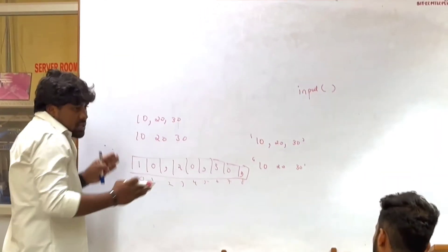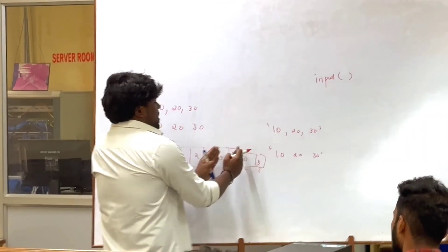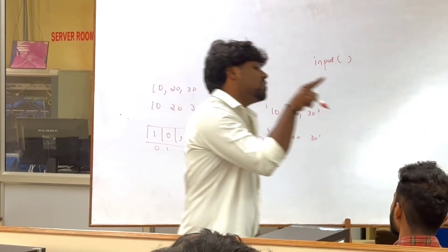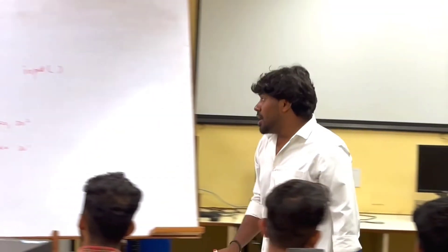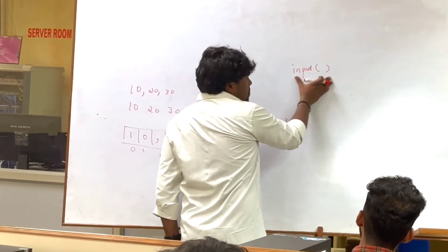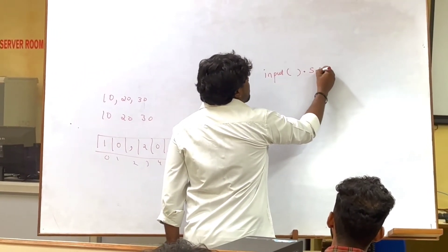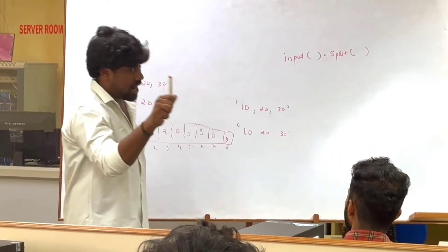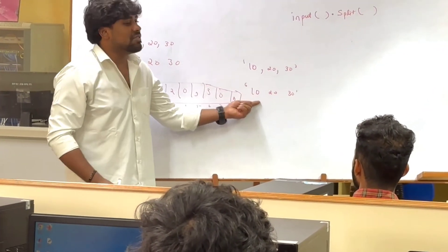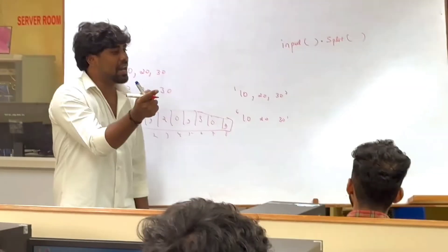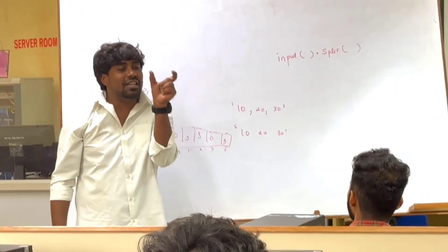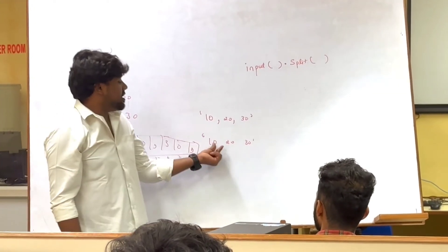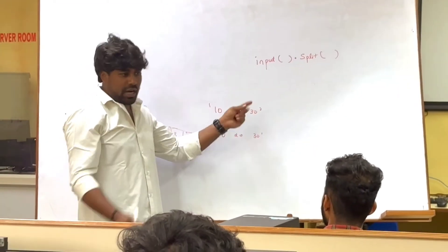Now I want to separate this — I want to separate 10, 20, and 30. For separation, what functionality are you using in the string? Split. If I use split() on this data, by default it will split according to space. If there is no space, it will have only one object.